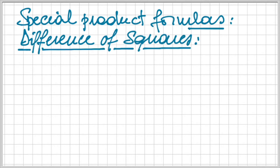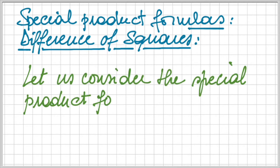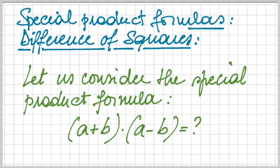When we look at the special product formulas, this is the third formula we will be specifying and calculating, and here we are looking at the difference of squares. What we are going to try to find is a special product formula for the product of a plus b with a minus b. Why do we call it the difference of squares? Well, basically the result of this multiplication will be a to the square minus b to the square — so difference of squares.